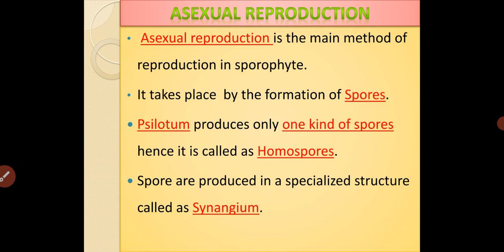Let us move towards the asexual reproduction. Asexual reproduction is the main method of reproduction in the sporophytic generation. It takes place by the formation of spores. Silotum produces only one kind of spores, hence it is called as homosporous in nature. These spores are produced in the specialized structure called as the synangium.